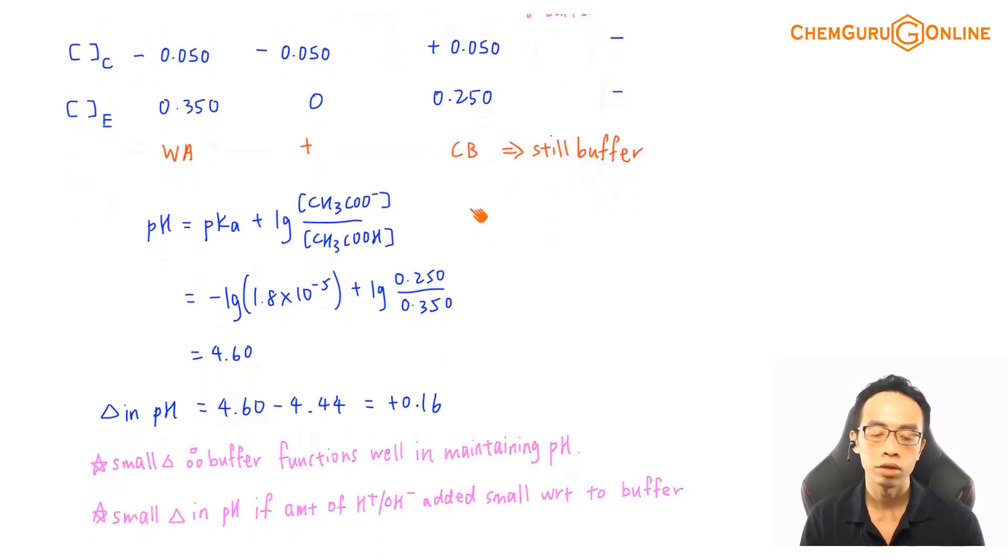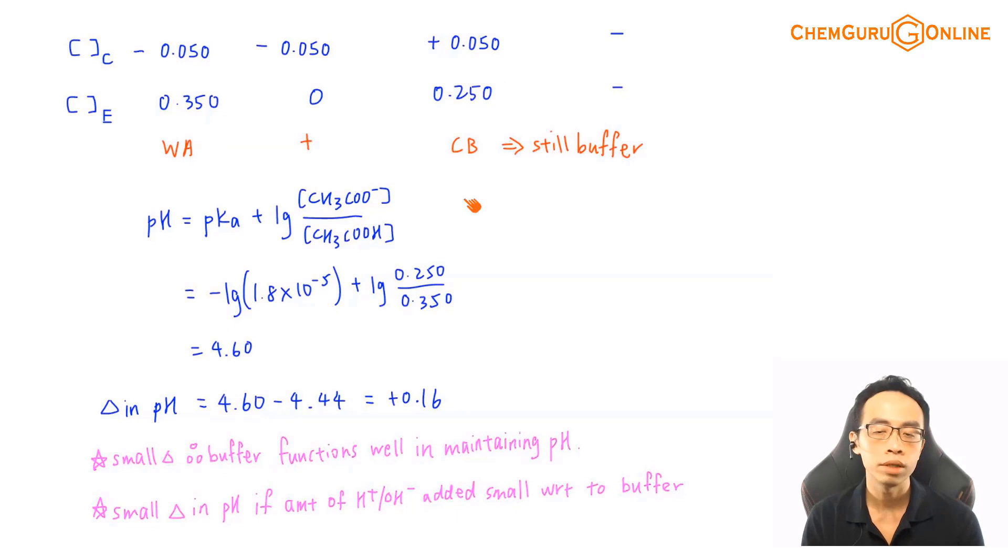If it is still a buffer, of course I can use the buffer equation to determine the pH of this buffer solution. So substituting these values in, it's just a slight change in terms of the concentration of your acid and your conjugate base, I can determine the pH to be 4.6.